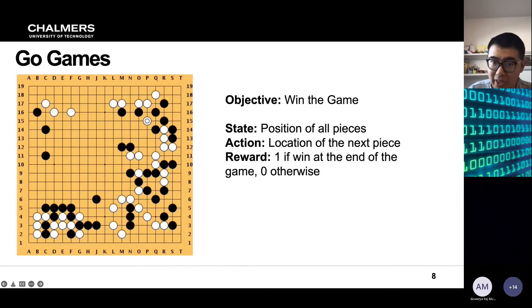The second example is the Go game. So the Go game is also quite a classic and interesting scenario for reinforcement learning. The objective here is to win the entire game and the state in this scenario is position of all pieces and the action is you can perform the location of the next piece. And the reward is basically one or a high reward if the agent wins at the end of the game or otherwise it will get nothing if it loses.